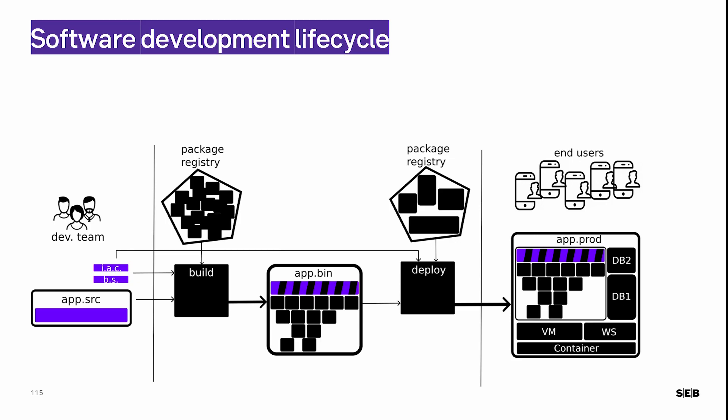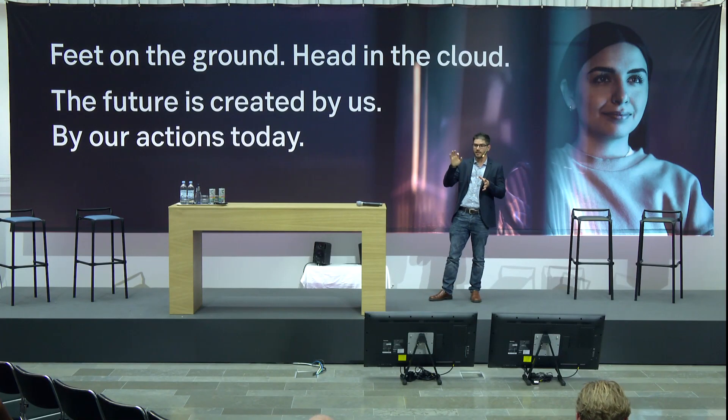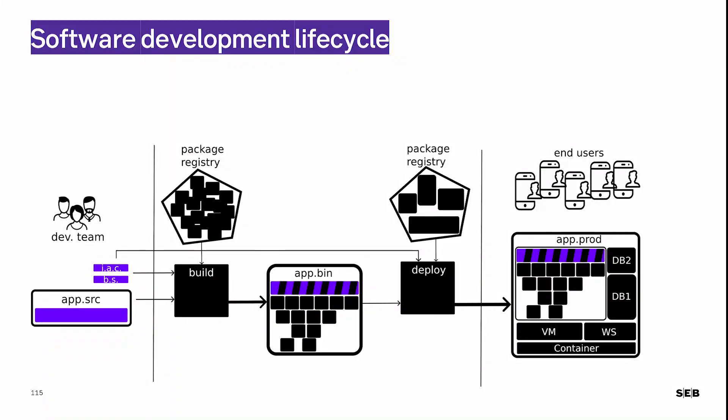During compilation and testing, the code written by developers needs to use external code from package registries — these are package managers that contain code necessary to build, compile, and test the application. Once you get the binary, it goes into a deployment pipeline, where again code is fetched from package registries. It doesn't matter whether it's deployed to the cloud or on-premises — you need to reuse code somehow, perhaps using Docker or an operating system to run your application.